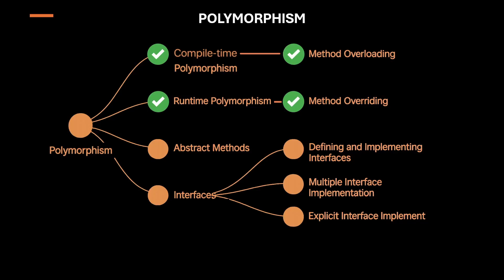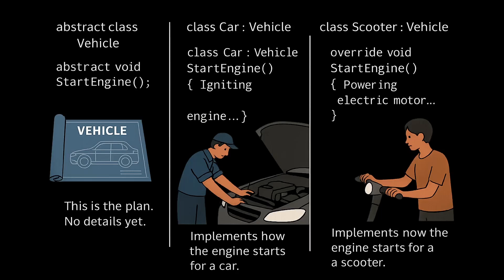Now that we've covered runtime polymorphism achieved via method overriding, let's move to the next concept: abstract methods. Think of an abstract class as a blueprint. Here we have an abstract class called Vehicle. This class just defines a plan for what a vehicle should be — it declares a method called StartEngine but doesn't say how to start the engine. It's like having a car blueprint: no physical car, just the plan.